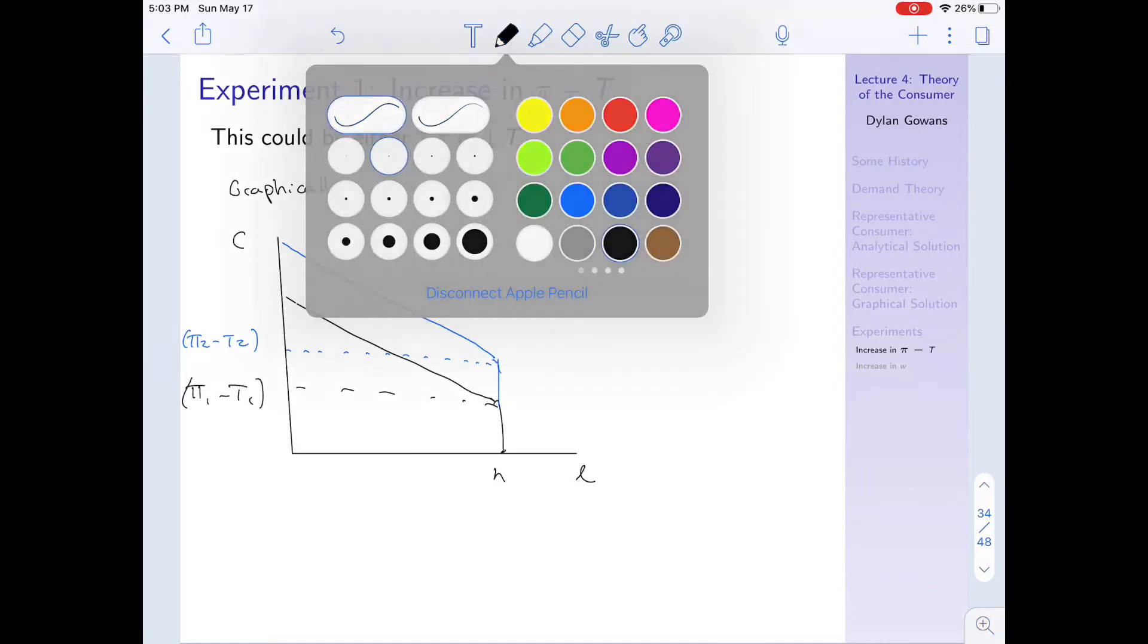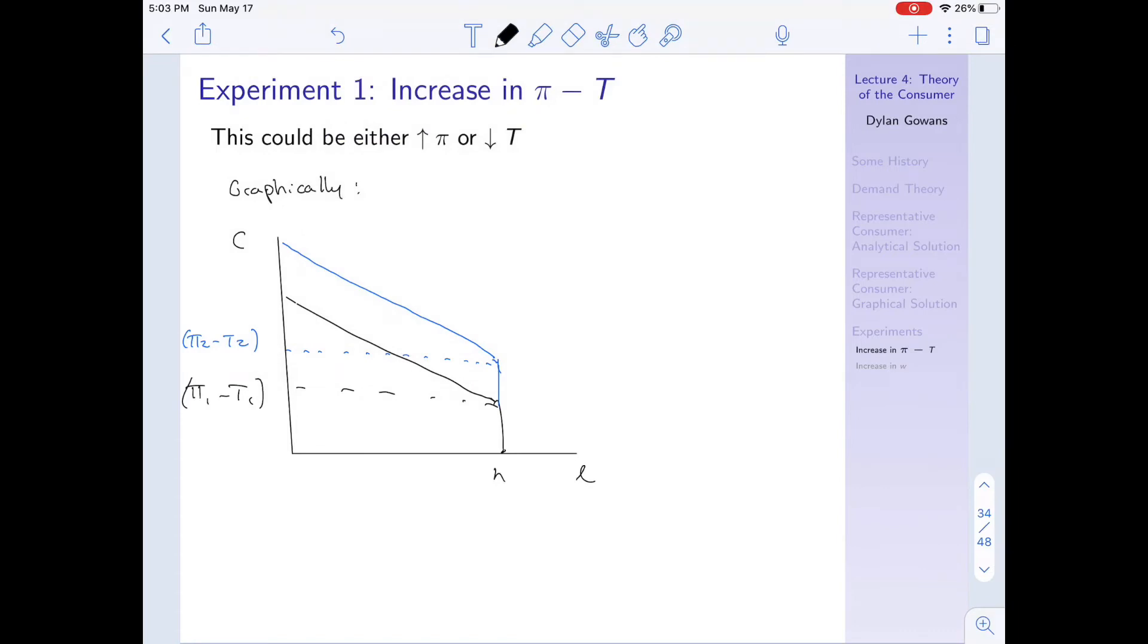But now what happens to our indifference curves? Well, here's our initial indifference curve. Let's say it was here, this was our initial optimal point. And then our second indifference curve after the fact I claim will be somewhere here. So in other words, it's going to result in an increase in both consumption and leisure. So let me write that: both consumption and leisure increase.